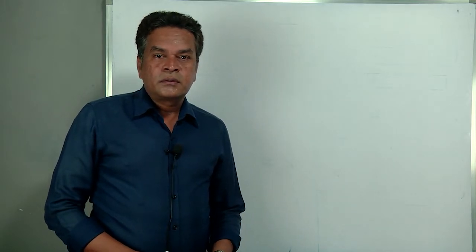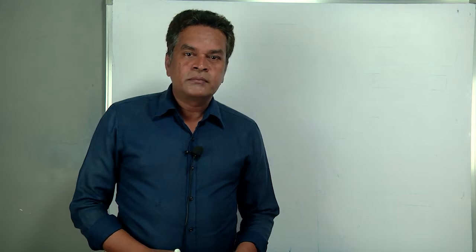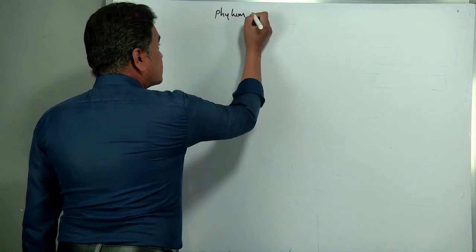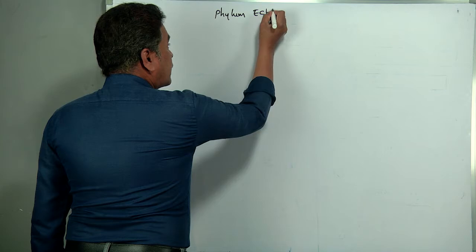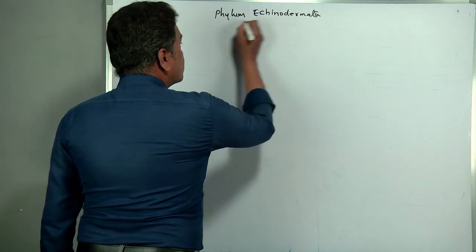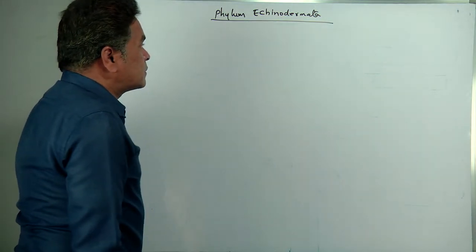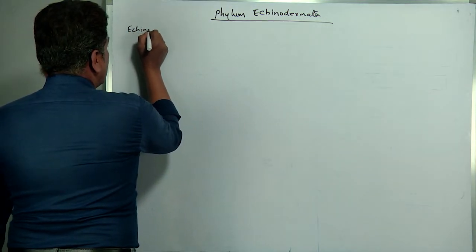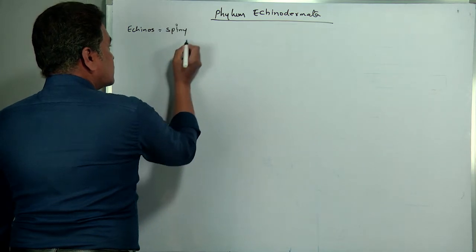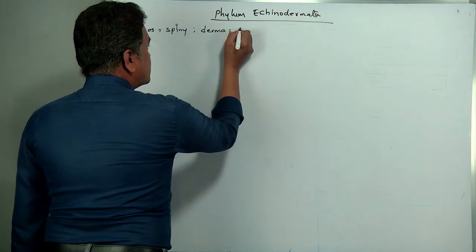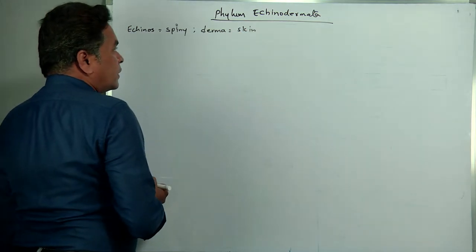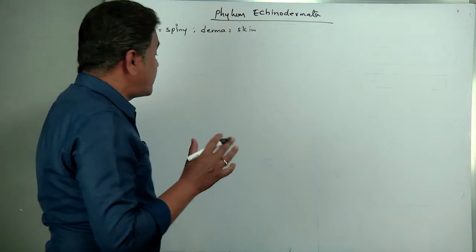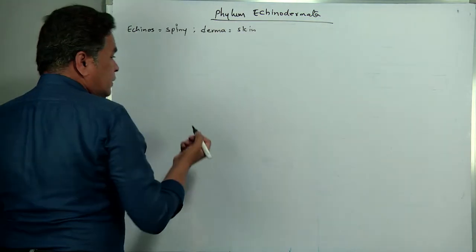Today we are going to talk about the next phylum and the last phylum, Echinodermata. The term is derived from 'Echinos' meaning spiny, and 'derma' meaning skin. Therefore, their body surface shows a spiny nature.